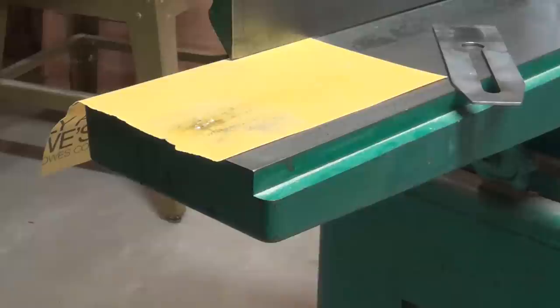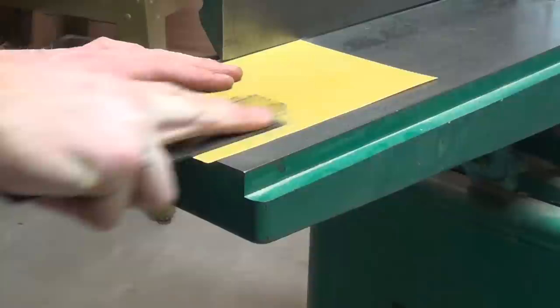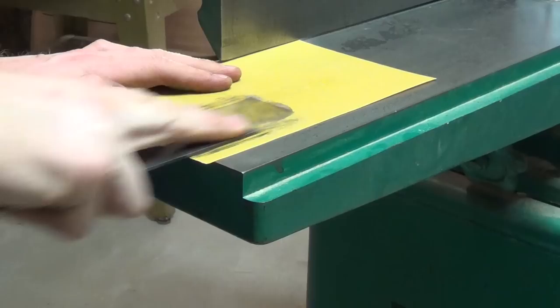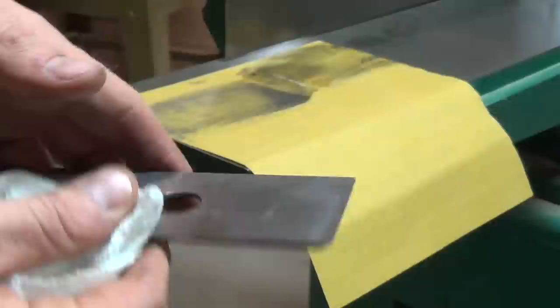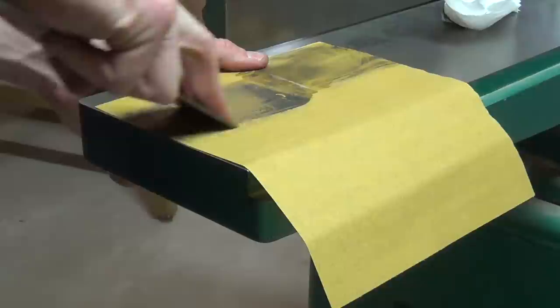The blade was already really flat, but it was important for me to remove some of the shallow pitting near the edge. It's a little bit hard to see, but after a few minutes with the 220 grit sandpaper, I started to get a really nice surface on the back of the edge.